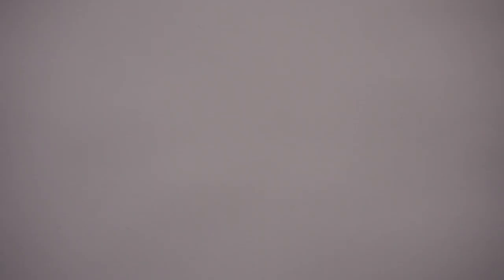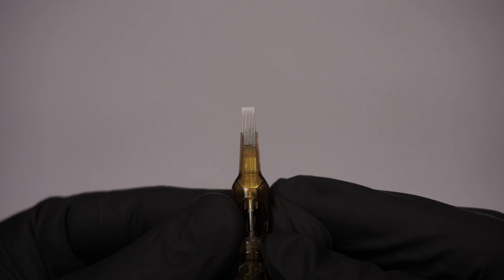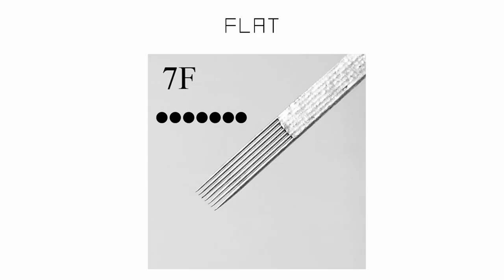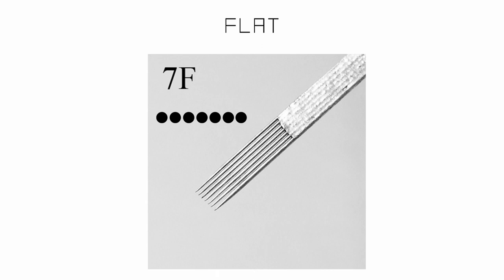The final entry is the flat needle, abbreviated F. Flat needles are a variation of the magnum needle, with the main difference being that the needle grouping is made of a single row of needles, which makes it great for work like hair.